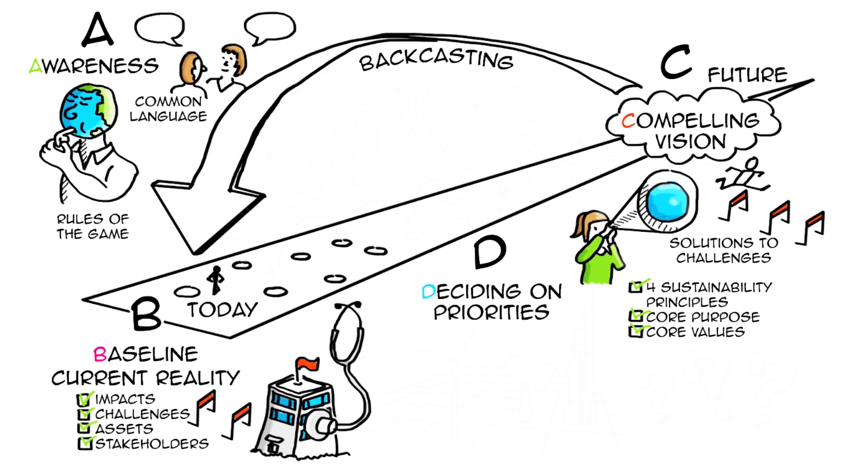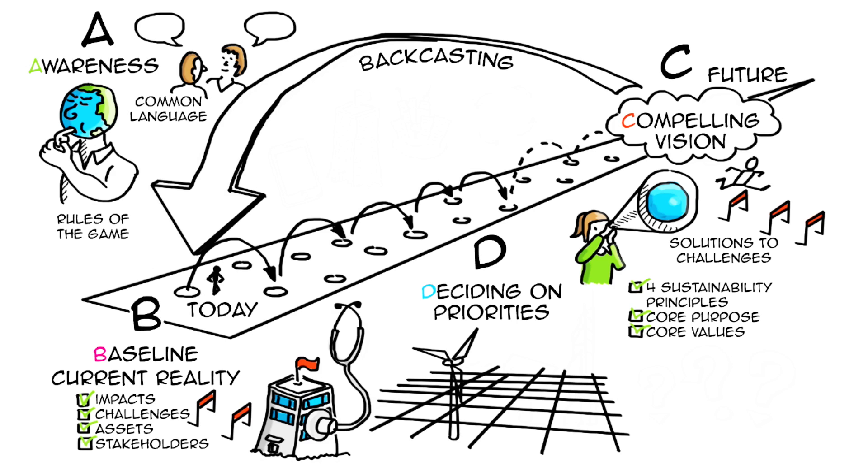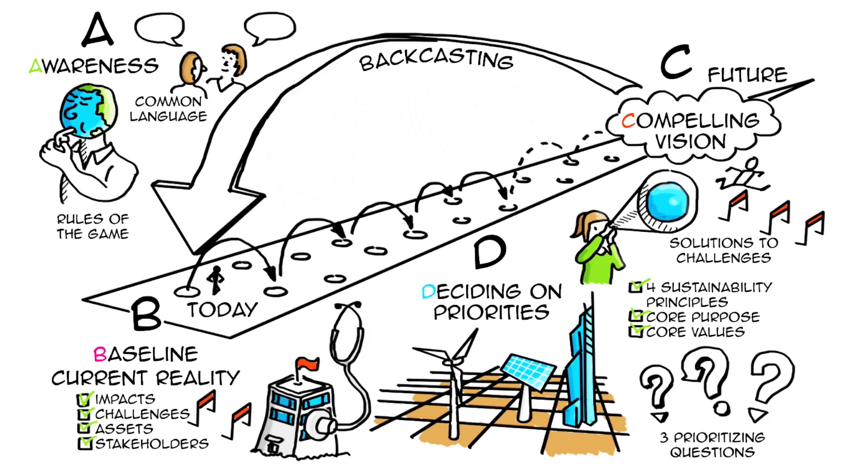D, decide on priorities. This step is about choosing between the solutions proposed in the previous step and deciding which ones are most strategic while allowing for tactical flexibility. Three questions can help us decide strategically on priorities here and this will be the topic of another video.